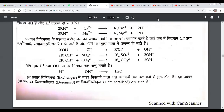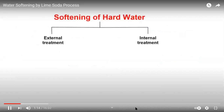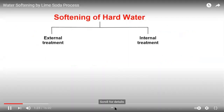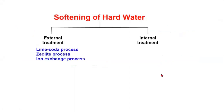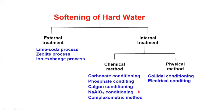Today, we will talk about the lime soda process in detail. In water softening, calcium and magnesium hardness must be removed, and we have two types of treatments: external treatment and internal treatment. For external treatment — lime soda process, zeolite process, ion exchange process. Internal treatment includes chemical methods: carbonate conditioning, phosphate conditioning, carbon conditioning, sodium aluminate conditioning, and complexometric method.